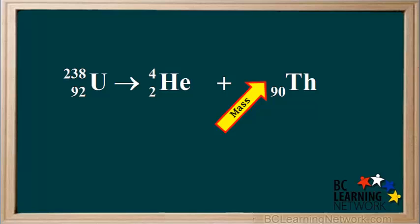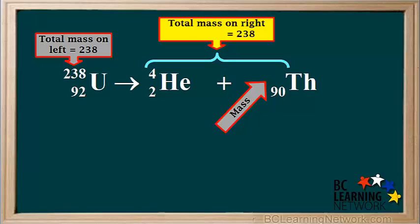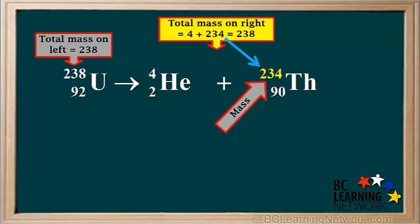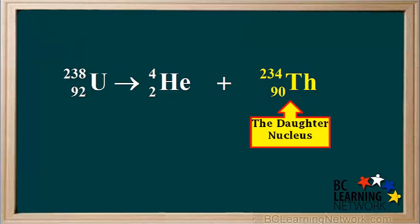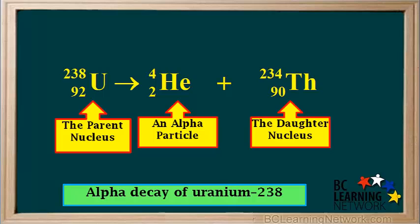Our next step is to find the mass of this isotope, the number written on the top left of the element symbol. The total mass on the left side is 238, so the total mass on the right side must also equal 238. The mass of an alpha particle is 4, so the thorium isotope must have a mass of 238 minus 4, which equals 234. So we write 234 for the mass of the isotope. The nuclear notation for the missing particle is Th with 234 on the top left and 90 on the bottom left. This is the balanced nuclear equation for the alpha decay of uranium-238.